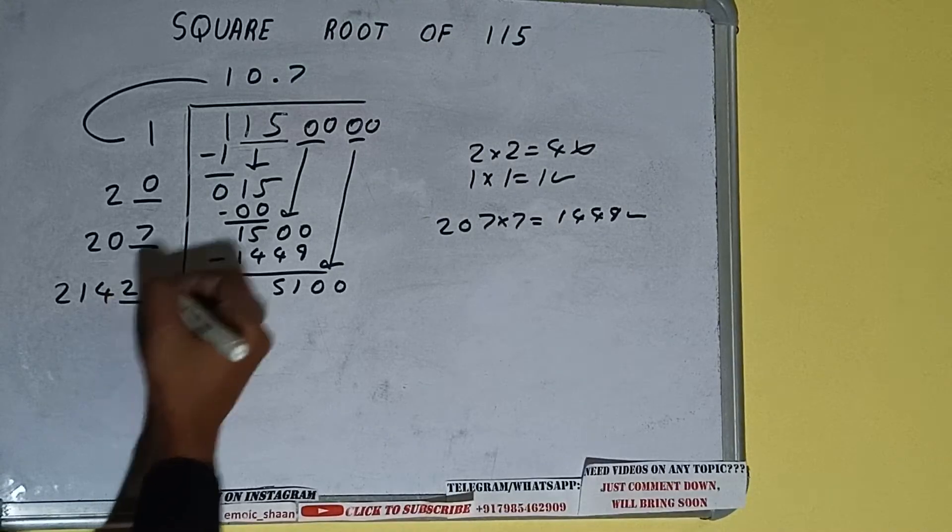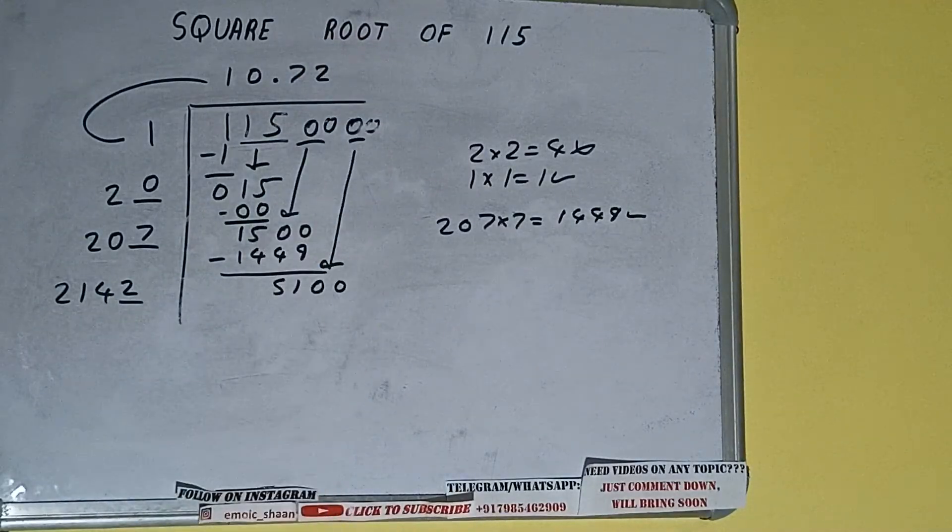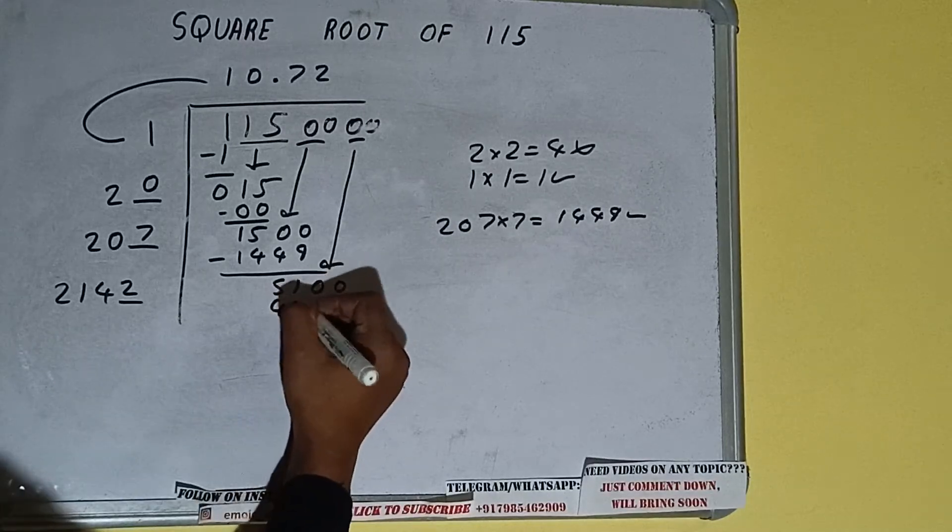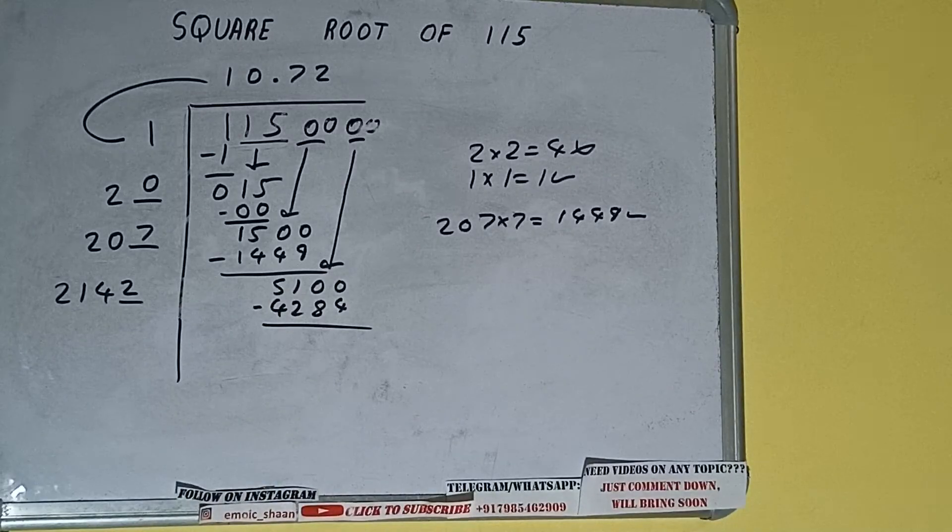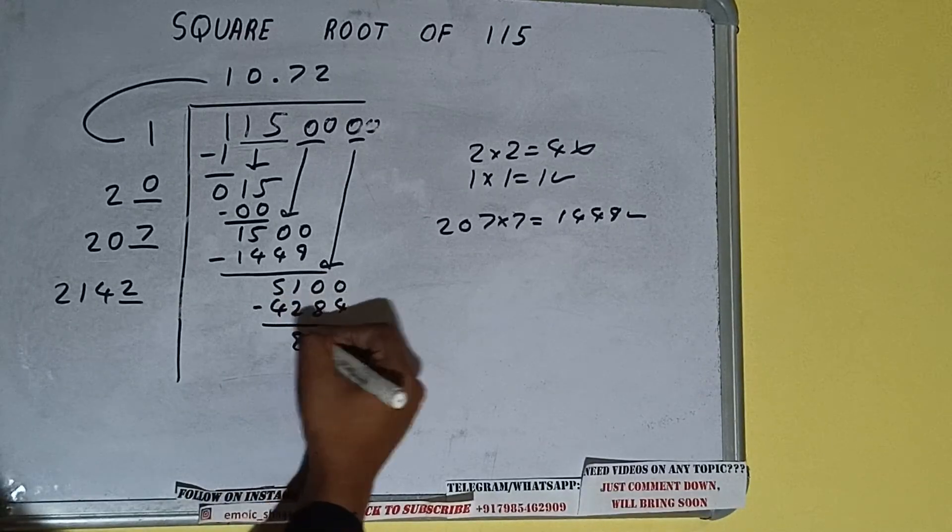Now we can try 2 times. 2 here and 2 here. And we'll be having 4284. Subtract it. And we'll be left with 816.